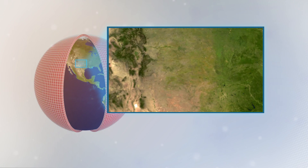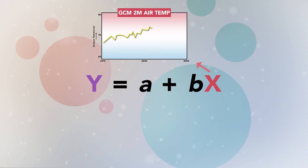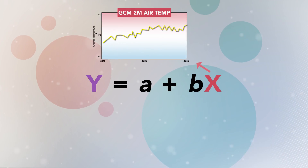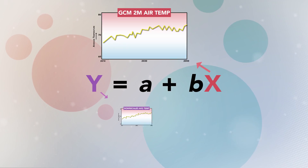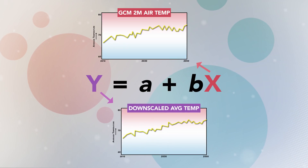On the other hand, the third technique, known as statistical downscaling, is based on finding statistical relationships between the climate variables from the coarse resolution GCM outputs and the finer scale observations. The statistical technique is less computationally demanding than the other methods and can be completed using desktop computers.